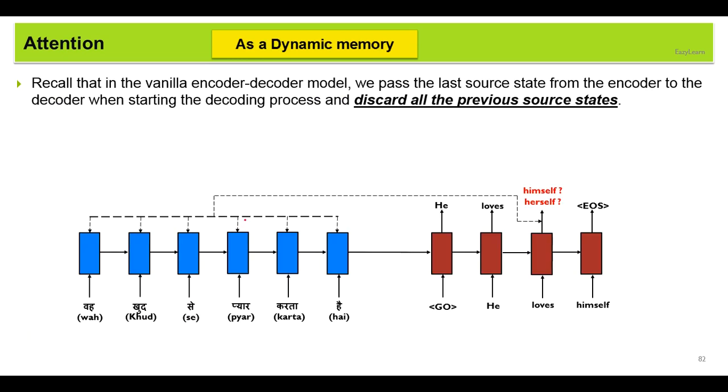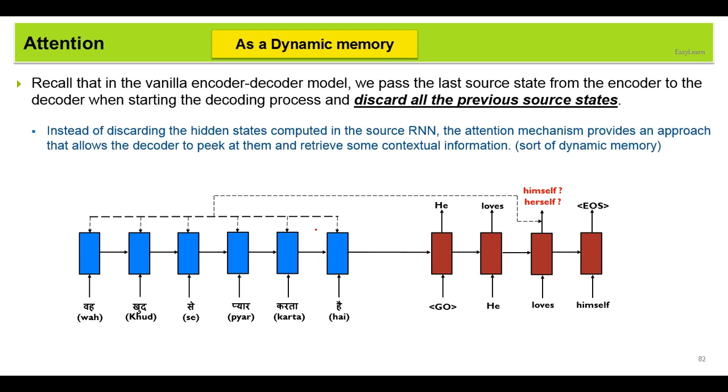Recall that in our vanilla encoder decoder model, we pass only the last hidden state to the decoder and we discard all these previous hidden states. But this attention mechanism allows the decoder to even have a look at these discarded hidden states whenever it requires and extract the contextual information. So it works as a sort of dynamic memory.